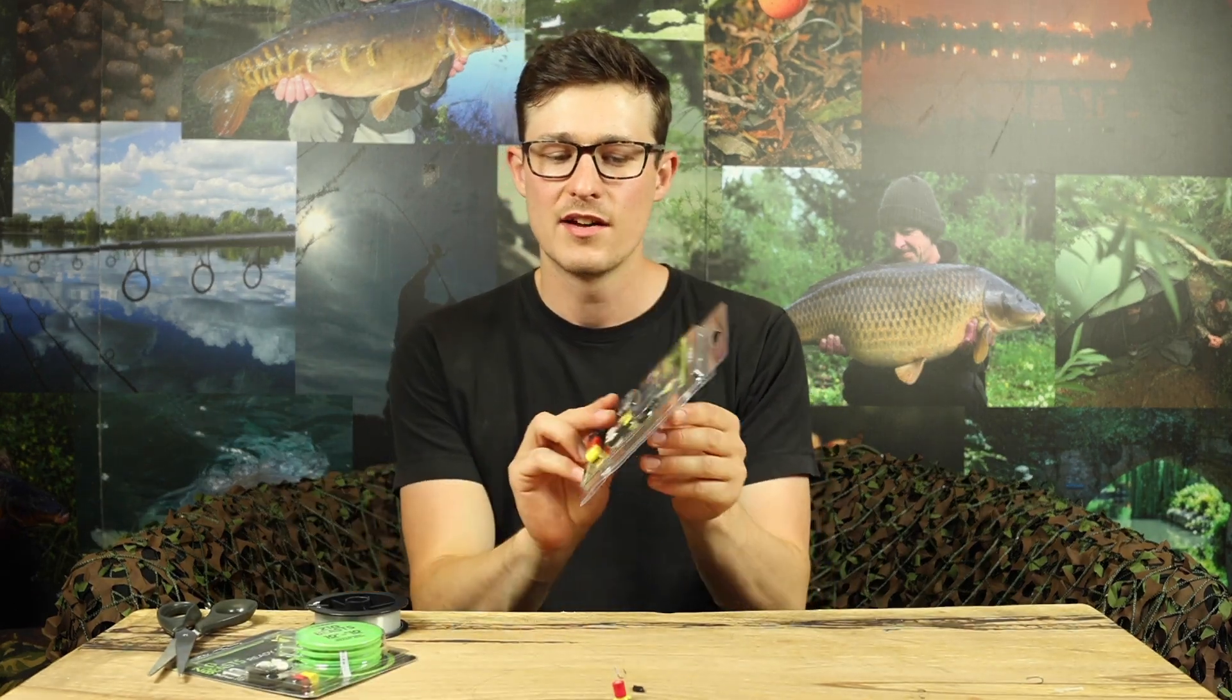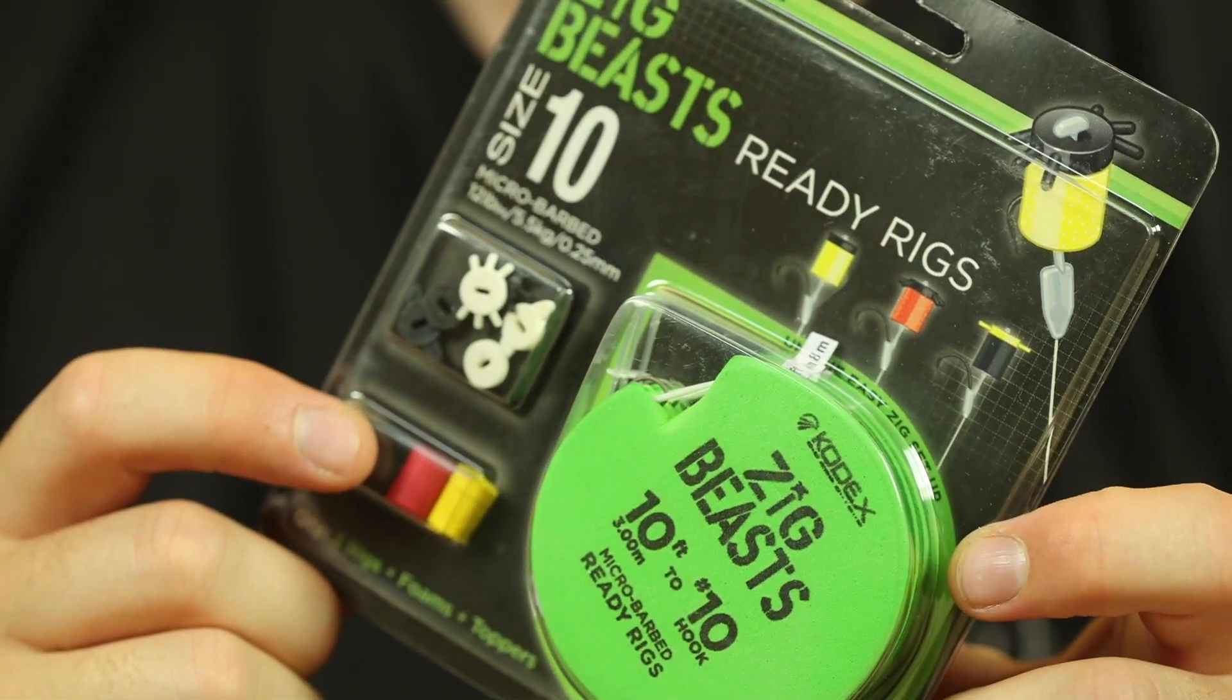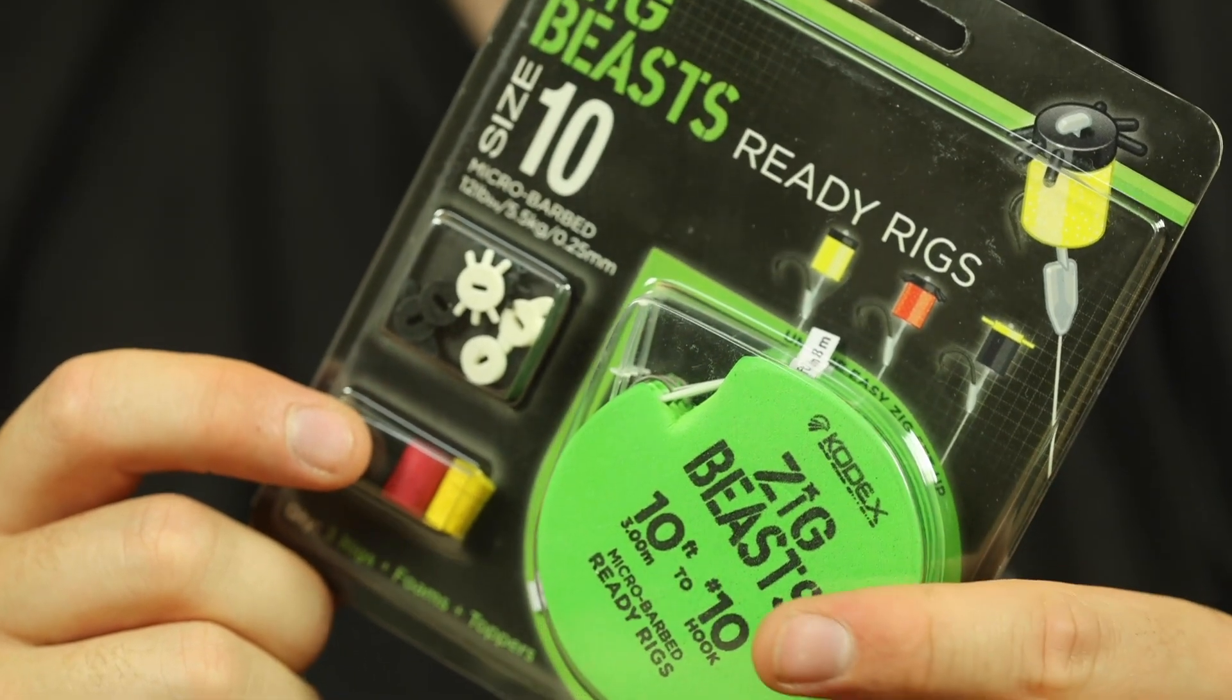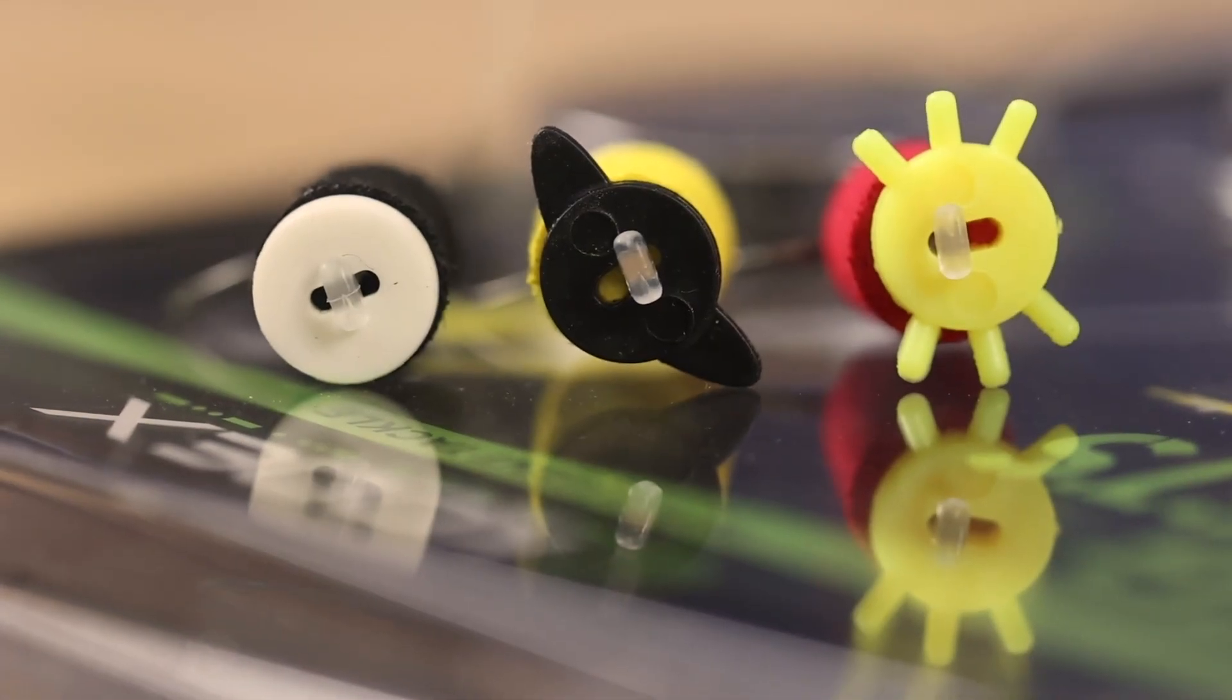So there you go that's the Zig Beast kits from Codex and for those of you that don't even want to tie your own hook sections up you can actually buy the Zig Beast ready rigs as well. So these ready rigs come with three ten foot hook links which are already tied up with the stems on the hooks, all you need to do is mount your choice of hook bait on there and you can actually just cut the hook links down to your required length.